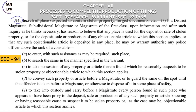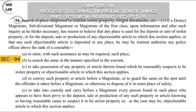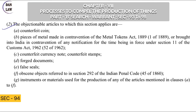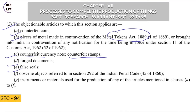Section 94 — search of a place suspected to contain stolen property, false documents, etc. If any District Magistrate, SDM (Sub-Divisional Magistrate), or Magistrate of First Class finds suspicion that sale or purchase of stolen property is going on, or any objectionable articles such as counterfeit coins, counterfeit currency notes, counterfeit stamps, forged documents, or false seals are being sold, they can issue a search warrant. The search must be conducted by an officer not below the rank of constable, who will produce the things before the court.